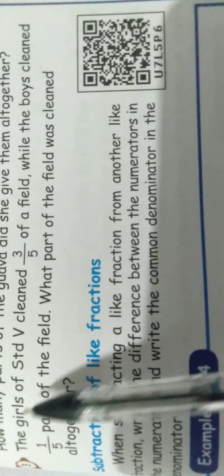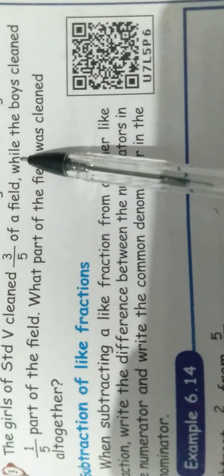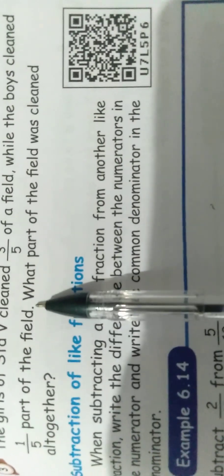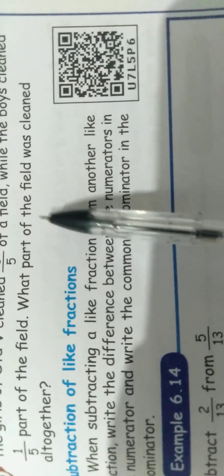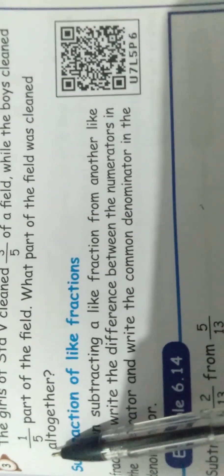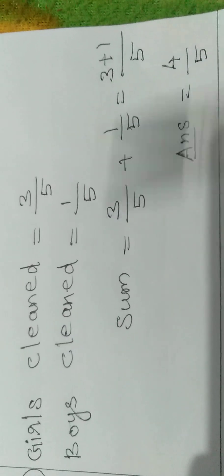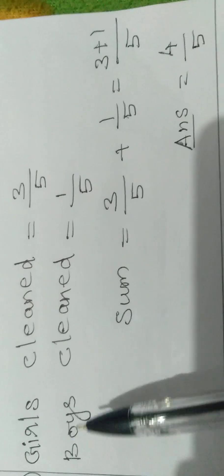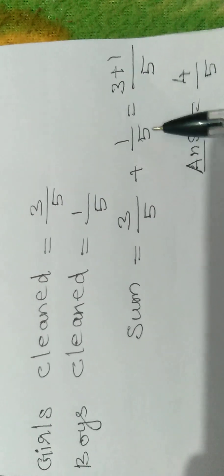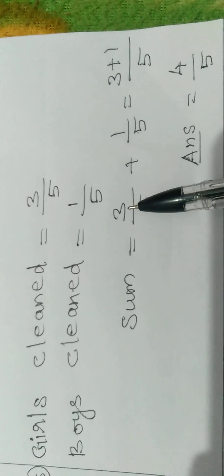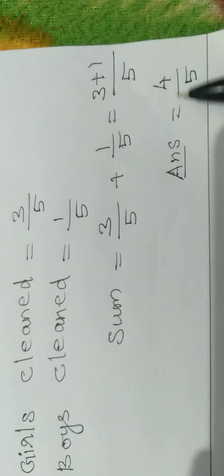Next number story: The girls of standard 5 cleaned 3 by 5 of a field, while the boys cleaned 1 by 5 part of the field. What part of the field was cleaned all together? All together means we add: 3 by 5 plus 1 by 5. The answer is fraction 4 by 5.